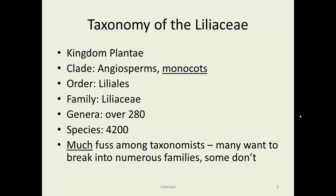Right now there's a huge fuss among plant taxonomists because this family used to be far larger and there is a move afoot to break it into numerous other families. If you look on the Wikipedia page, it has a list of species that used to be in the Liliaceae that are no longer. Things like garlic and onions, amaryllis, asparagus, hosta, and trillium used to be in the Liliaceae but no more. Some of those other families will be covered because they have enormous impact on mankind, and some of them have interesting poisons too.